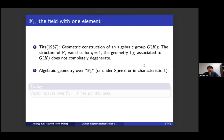Another motivation in algebraic geometry over F1 — sometimes called algebraic geometry under Spec Z or in characteristic one — is to understand Spec Z as some sort of curve over F1. To do so, one has to work with something larger than categorical rings, because the integers is an initial object in the category of rings. Another application is tropical geometry, whose algebraic side involves semi-rings.